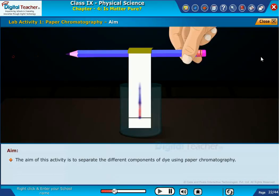The aim of this activity is to separate the different components of dye using paper chromatography.